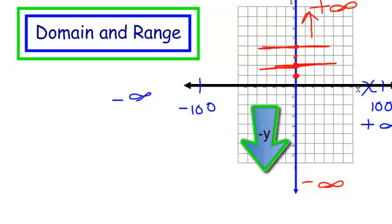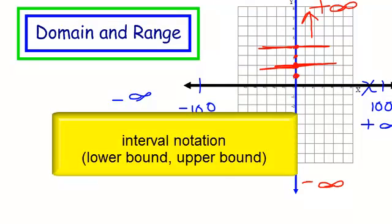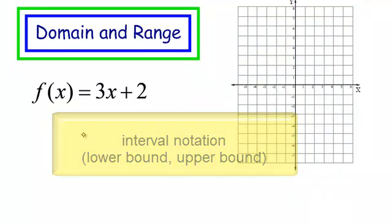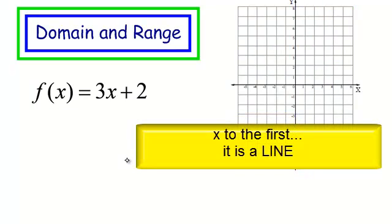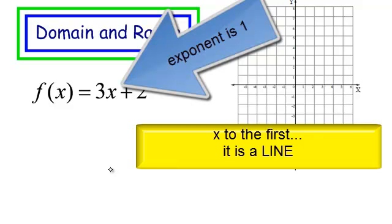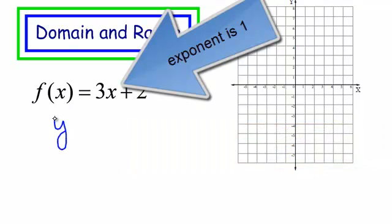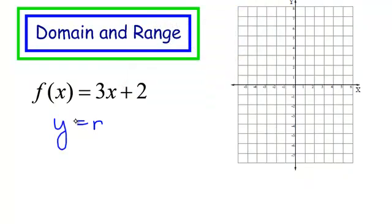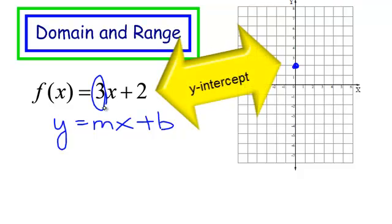When you talk about the domain and range, it's usually an interval of numbers, so you do need to make sure you put them in order from the smallest to the largest. Let's get to work. This is a line: f of x equals 3x plus 2. You should remember how to graph this — it's in the form y equals mx plus b. Very quickly, the y-intercept crosses the y-axis at 2, and the slope is 3.